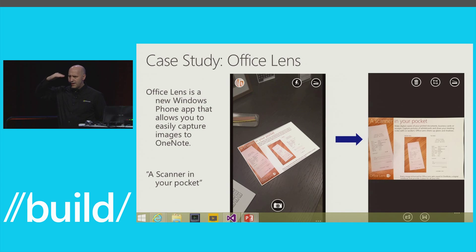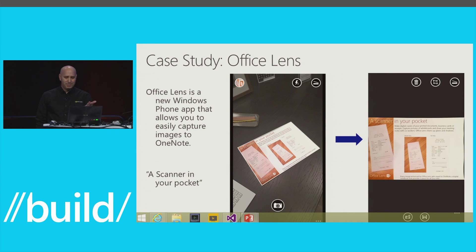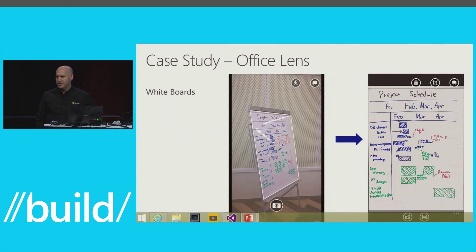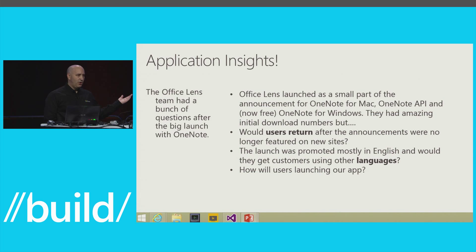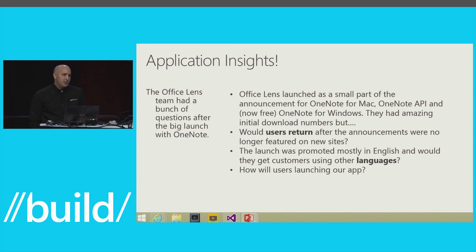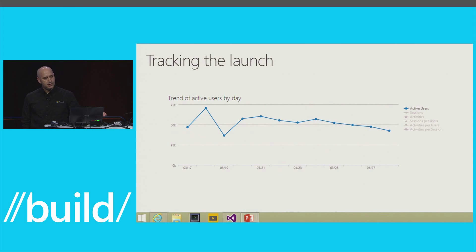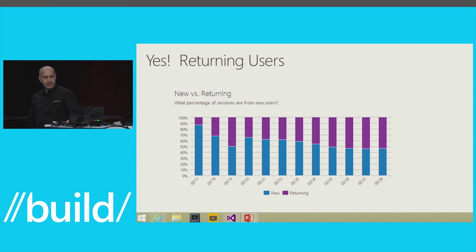The last thing is a case study: Office Lens. Has anyone used Office Lens? It's a great application that takes photos of whiteboards and receipts and loads them right into OneNote. These guys have instrumented their application with Application Insights. They had a big launch when OneNote for Mac launched, but they didn't know if people would come back — was it a one-time thing? They also didn't have promotion outside of English for the launch. Looking at the chart from first launch, they kept getting new users and also had a lot of returning users, which they were very happy about.